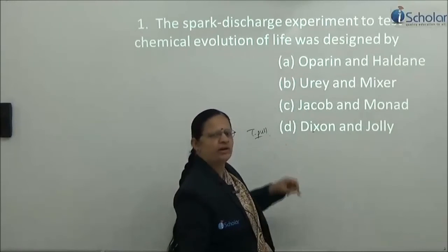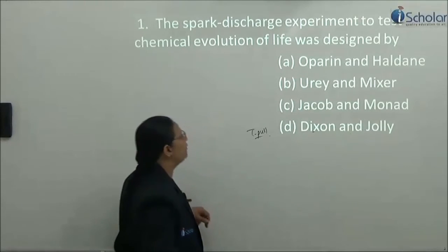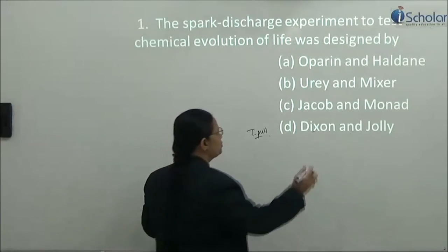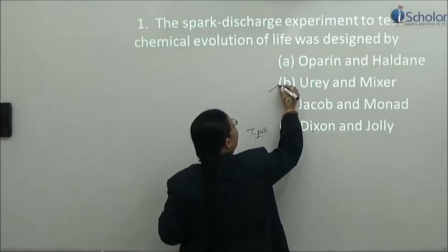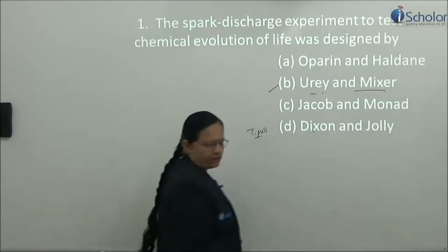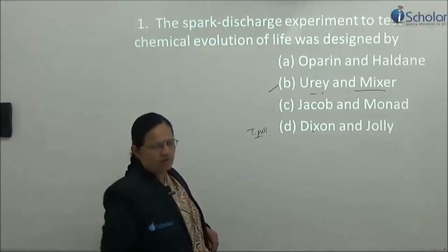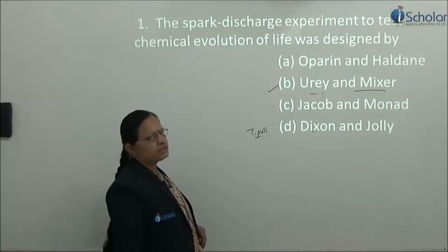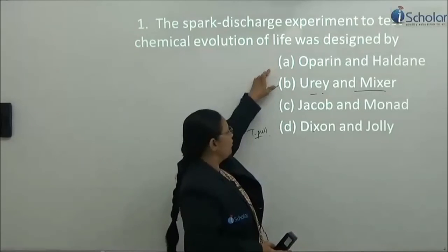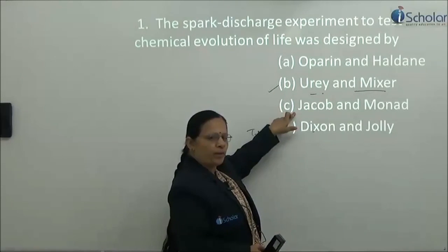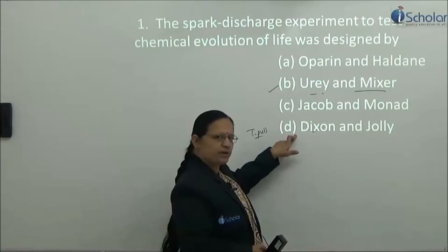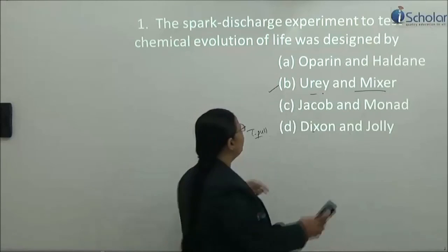The chemical evolution of life — the spark discharge experiment to prove that evolution of life took place — was put forward by Urey and Miller. So the correct option is B: Urey and Miller. Option A was Jacob and Monod for the lac operon model of gene expression; Dixon and Jolly for transpiration pull. The correct answer is Urey and Miller, option B.